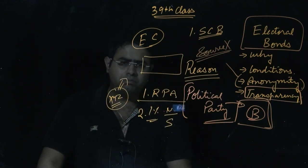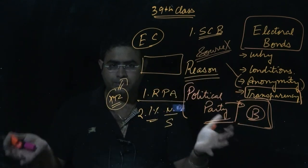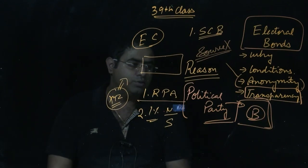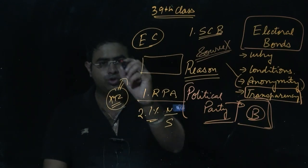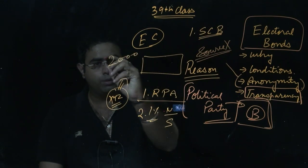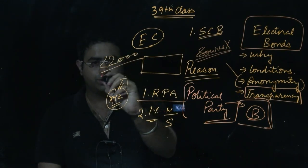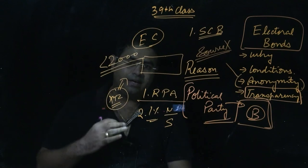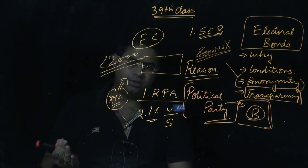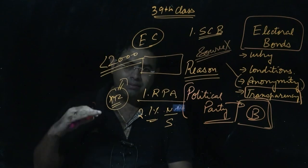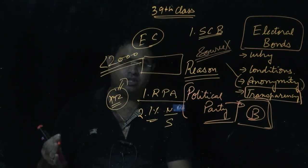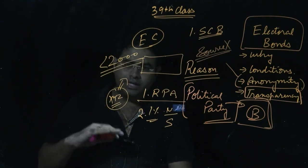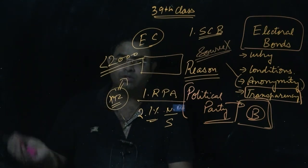This mechanism of electoral bonds was introduced to promote transparency and anonymity. Electoral bonds below Rs 2000 are not issued. A party can have any number of donors, and is not liable to give information about donors contributing less than Rs 2000.